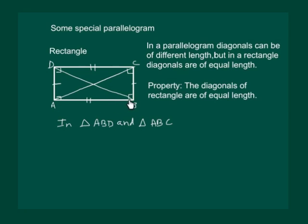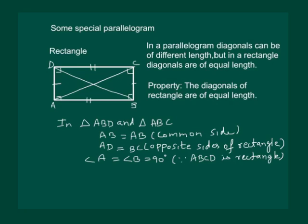Consider triangle ABD and triangle ACB. In both these triangles: AD is equal to BC, since ABCD is a rectangle and opposite sides are equal; AB is equal to AB, which is common; and angle A is equal to angle B, both being 90 degrees by the property of a rectangle. Hence both triangles are congruent by SAS property — triangle ABD is congruent to triangle ABC.